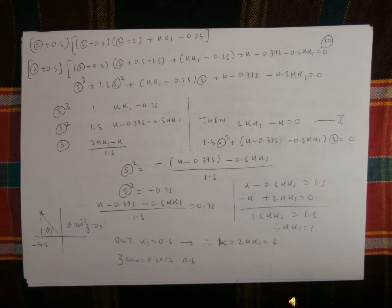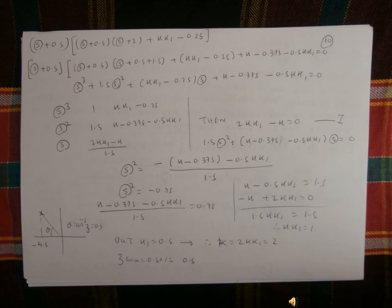So when we're going to solve it, we solve (x + 0.5)(x + 0.5)(x + 0.5)(x + 2) + 3·k1 minus 0.25, giving S³ + 1.5S² + (kk1 minus 0.125)S + (k minus 0.375 minus 0.5·kk1) equal to 0. The S³ coefficient of 1 is set, the S² coefficient of 1.5 is set, and the S coefficient 2·kk1 minus k divided by 1.5 is set. The S² coefficient gives kk1 minus 0.5·kk1 equal to 0.2, and S² gives k minus 0.375 minus 0.5·kk1 equal to 1.5.